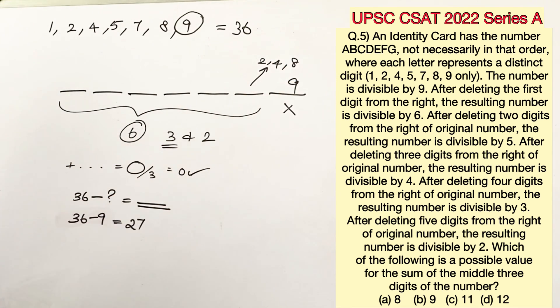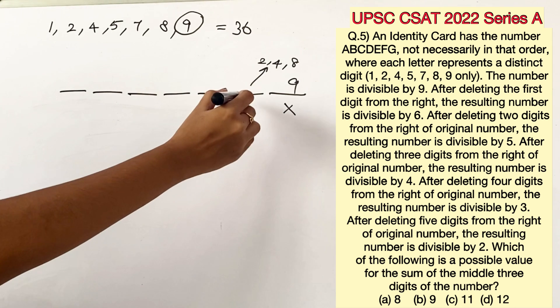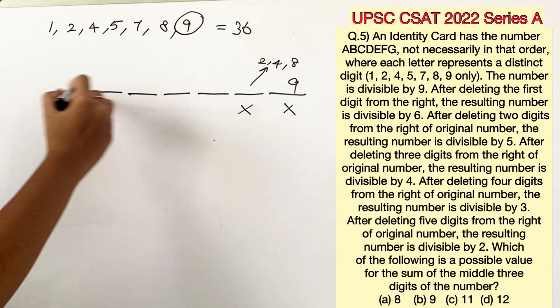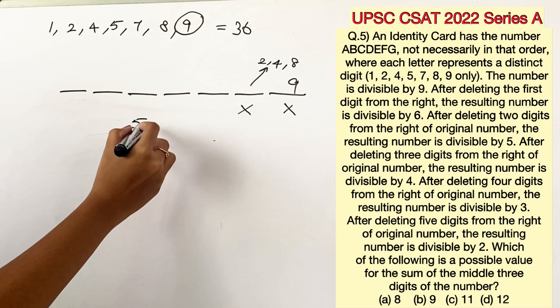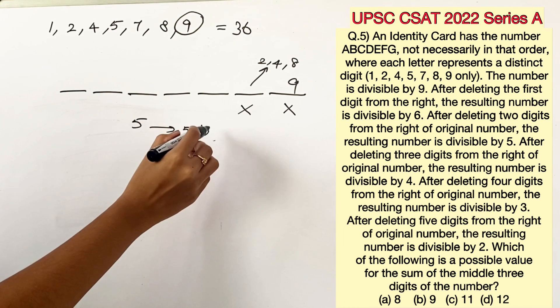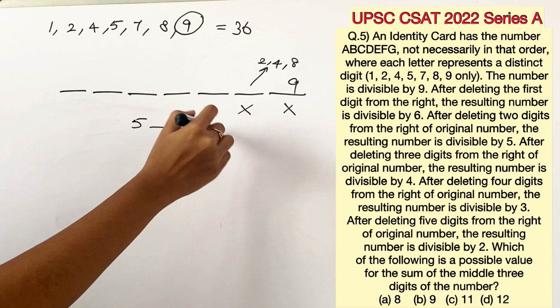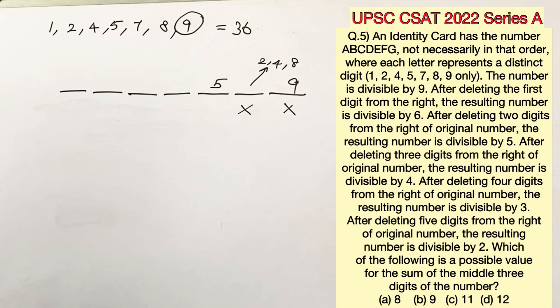Hence now we have found out that the last number is 9. The next statement says when you delete 2 digits from the right the resulting number is divisible by 5. We are well aware that the divisibility rule for 5 is the number should end in either 5 or 0. Since 0 is not in the digits we know that this number is definitely 5.